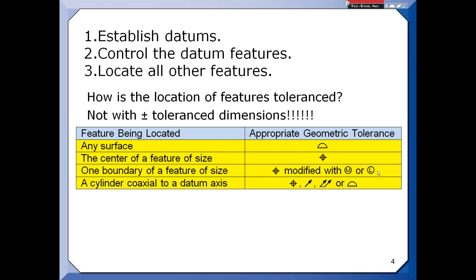And there are these special features that are cylinders that happen to be coaxial to a datum axis. You run into these mainly with parts that are made on a lathe. And we can still use position or profile on them, or we can control where they are using the runout tolerances.